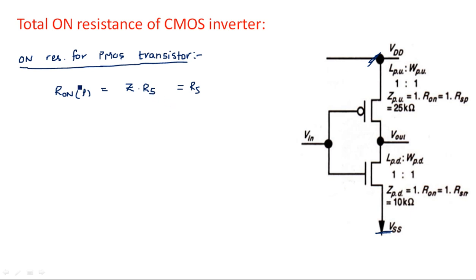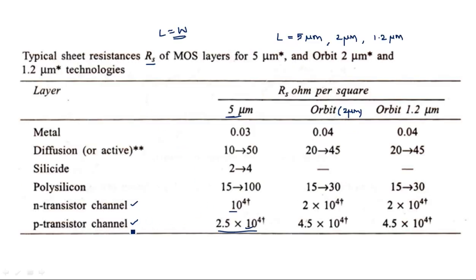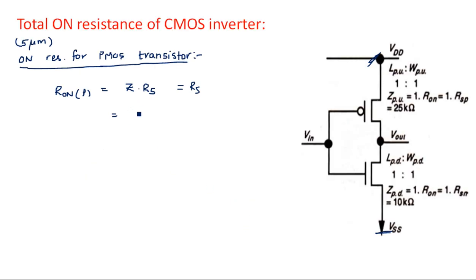For the P-channel transistor at 5 micrometer technology, with Z equal to 1, R_on for P equals Z × RS equals 1 × 2.5 × 10⁴ ohms per square, which equals 25 kilohms. This is the ON resistance for the P-channel transistor in the CMOS inverter.